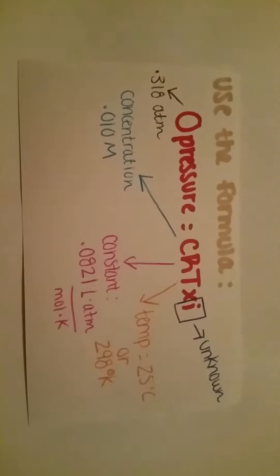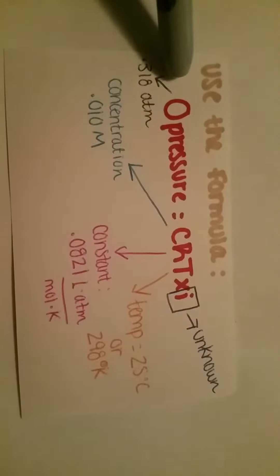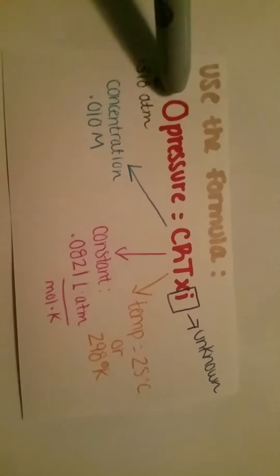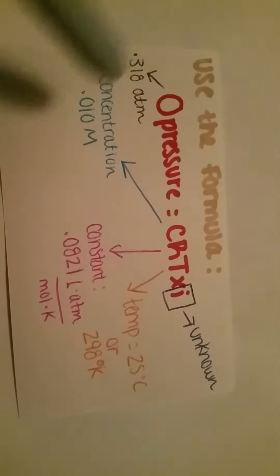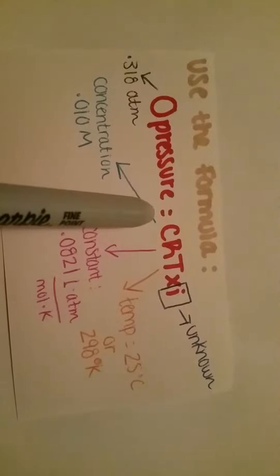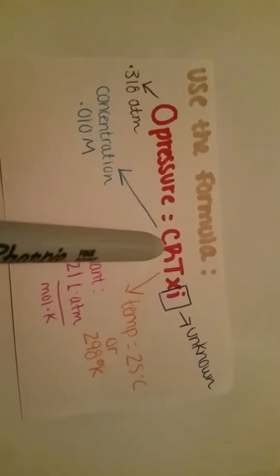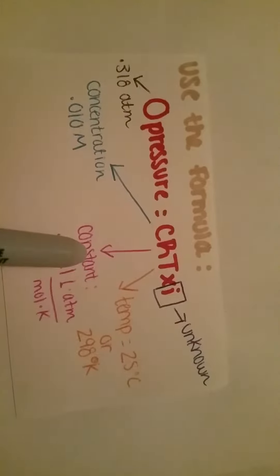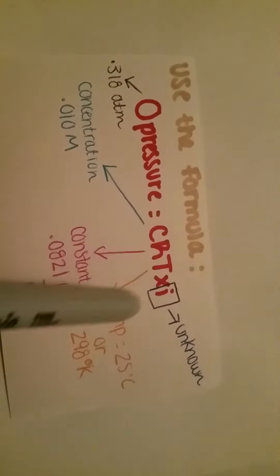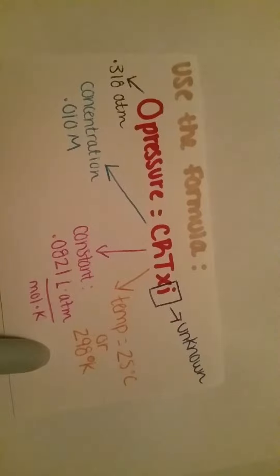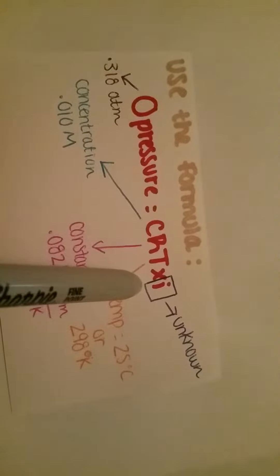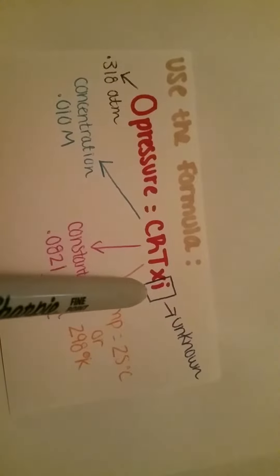For this problem we are going to use the following formula: osmotic pressure is equal to the concentration times R, which is a constant, times temperature in degrees Kelvin, times I, which is our unknown.